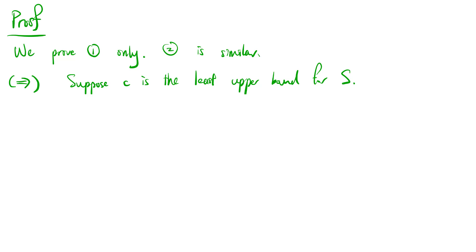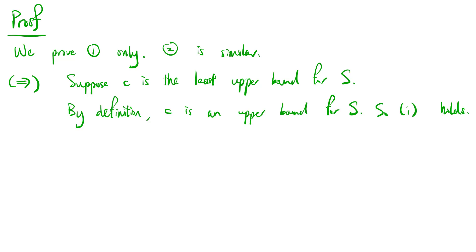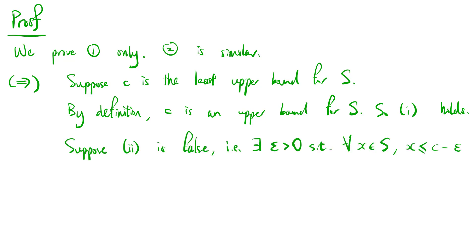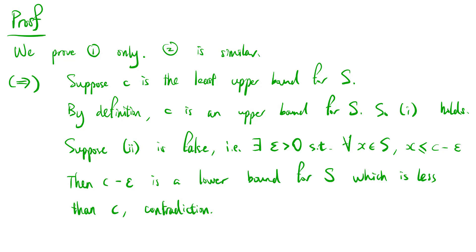Suppose c is the least upper bound for s. By definition, c is an upper bound for s, so the first condition holds. Suppose the second condition is false; in other words, there exists an epsilon greater than 0 such that for all x in s, x is less than or equal to c minus epsilon. Then c minus epsilon is an upper bound for s which is less than c, and this is a contradiction. So the second condition holds.